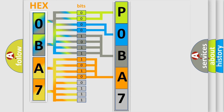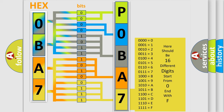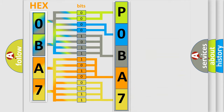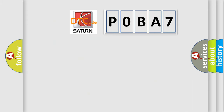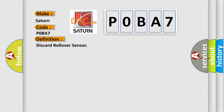A single byte conceals 256 possible combinations. We now know in what way the diagnostic tool translates the received information into a more comprehensible format. The number itself does not make sense if we cannot assign information about what it actually expresses. So, what does the diagnostic trouble code P0BA7 interpret specifically for Saturn car manufacturers? The basic definition is: Discard Rollover Sensor.